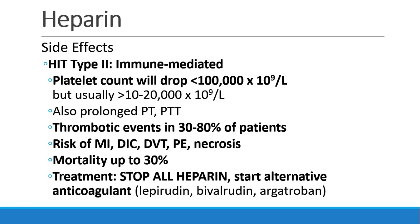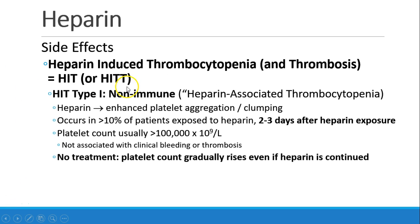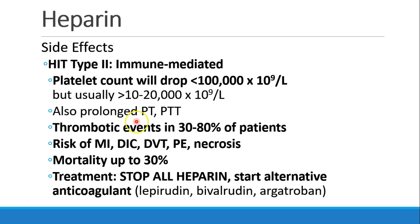HIT type 2 is severe. It's immune-mediated, and the platelet count will drop below 100,000, although usually it will stay above 10 to 20,000. Their PT and PTT may also be prolonged. We call it HIT with two T's sometimes for thrombocytopenia and also thrombosis. We do see thrombotic events in anywhere from 30 to 80% of patients, and they're at risk for MI, DIC, DVT, PE, and necrosis of extremities, with a mortality of up to 30%. In these patients, you need to stop all heparin and try another form of anticoagulant, like bivalirudin or argatroban.